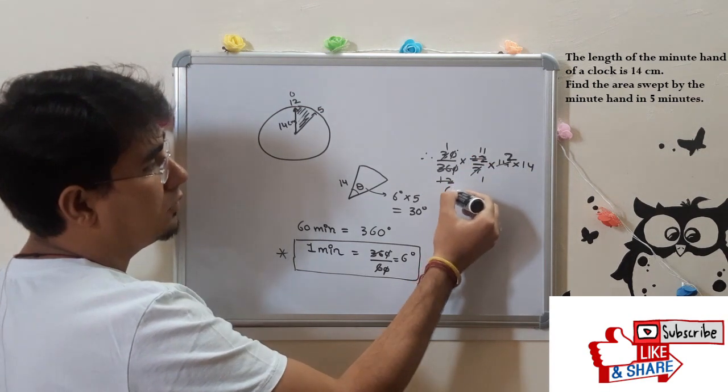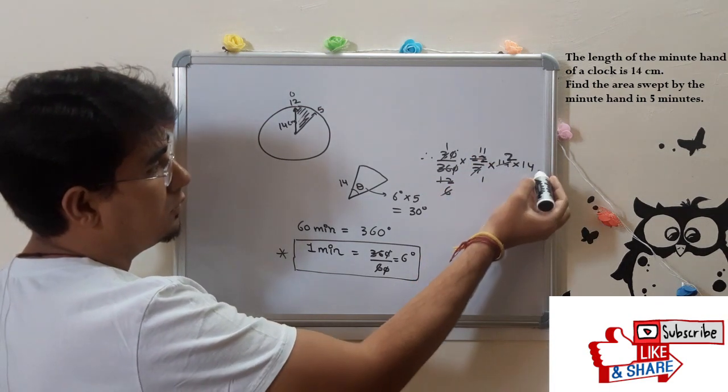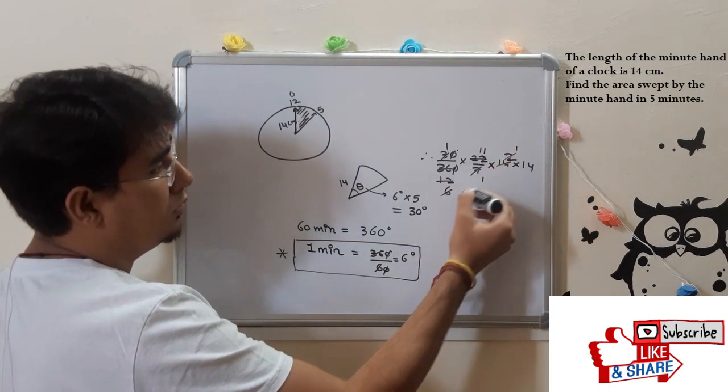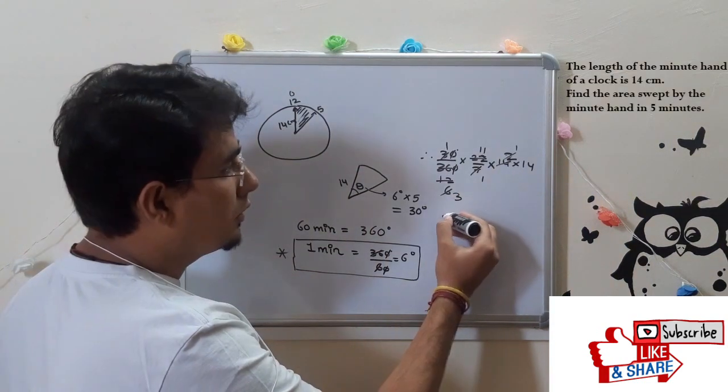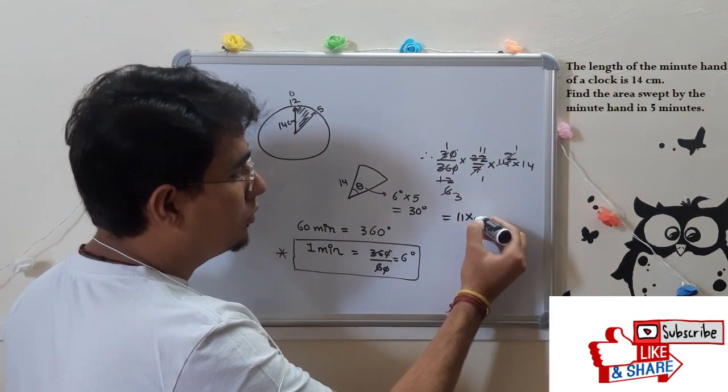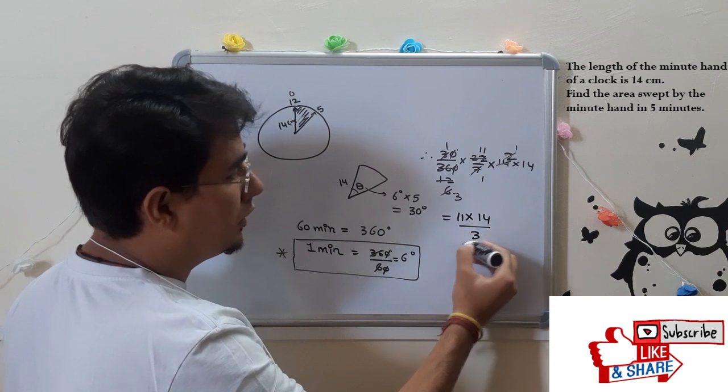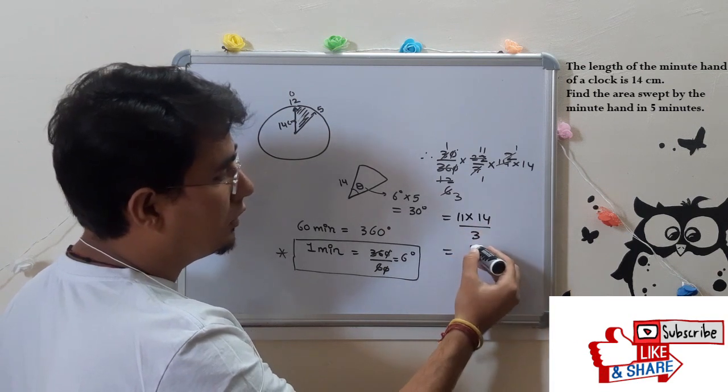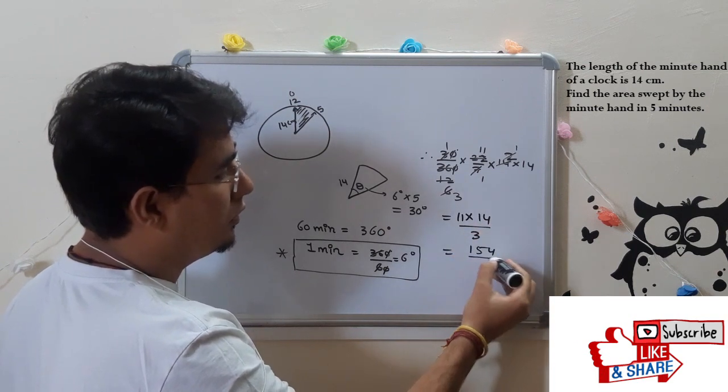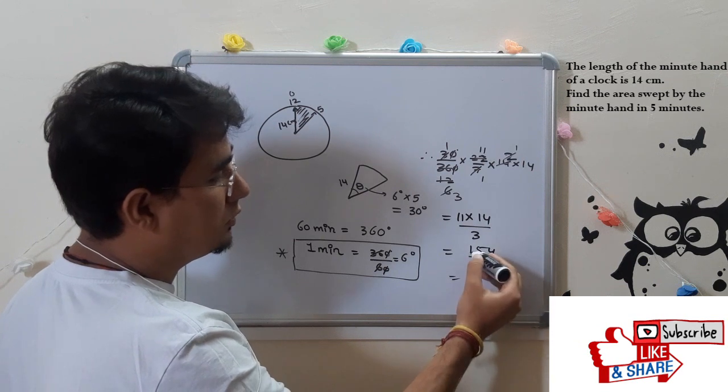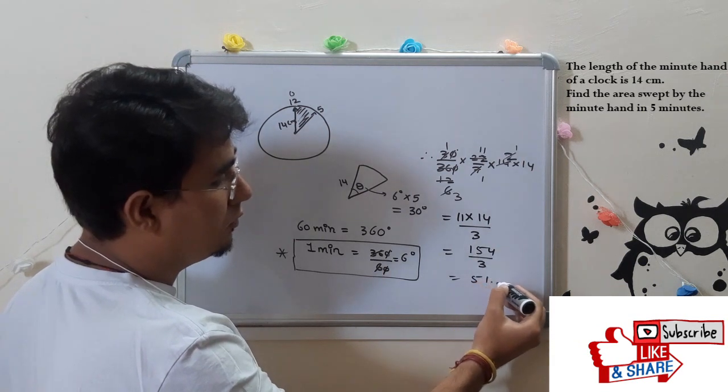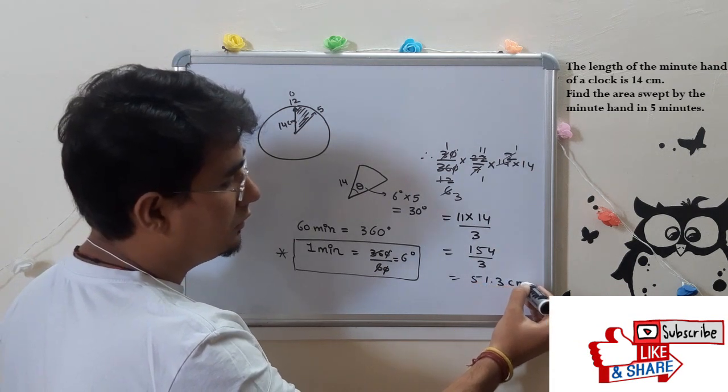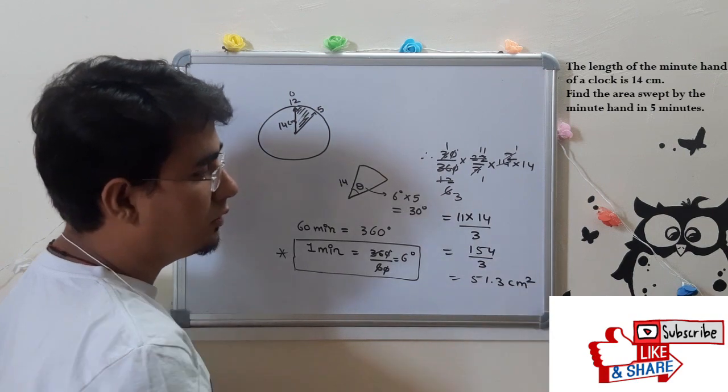This equals 51.3 cm squared. Make sure to write cm squared.